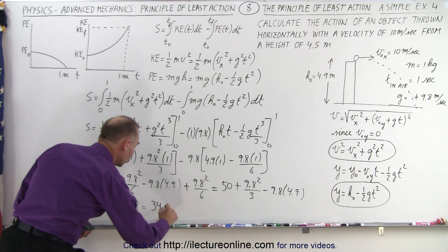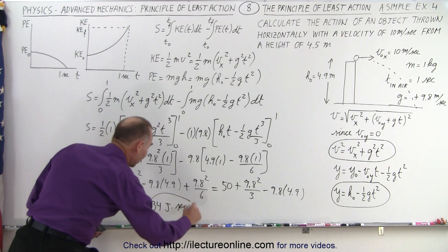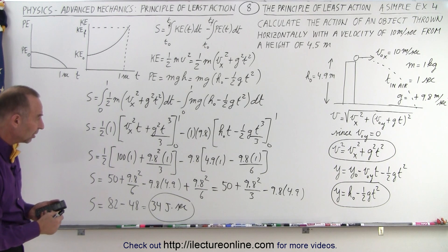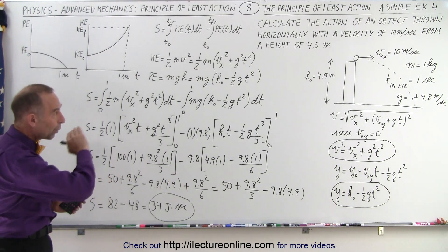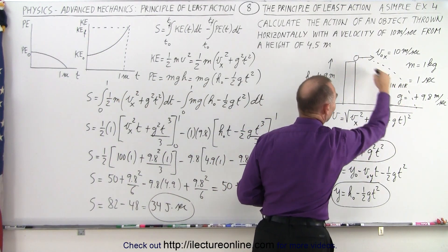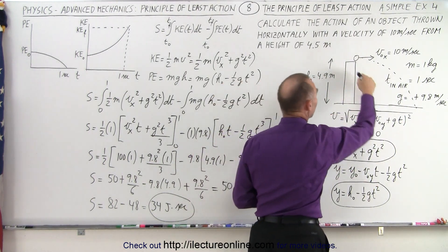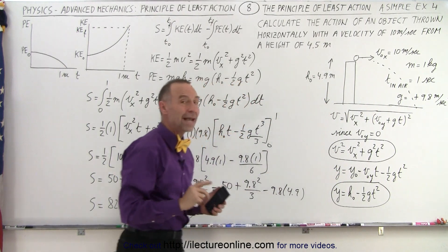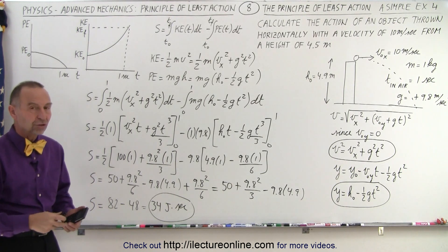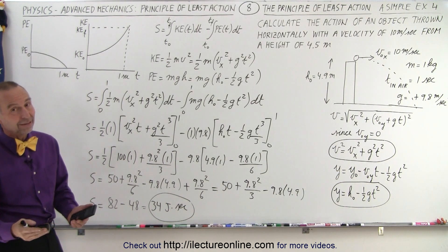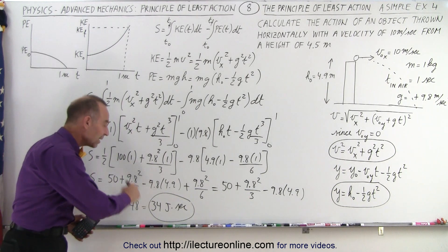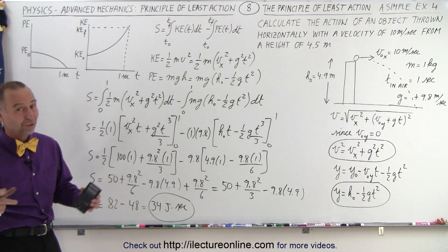So 34, and the units are joules times seconds — it's energy times time. We get a positive value because we start with quite a bit of kinetic energy initially. That should be the lowest number we'll get no matter what path we take. If we start from this location, end up in this location, and take exactly the same amount of time — one second — regardless of what path we take, the calculated action will be bigger. We presume this is the path of least action because that's the path the object actually takes. In the next couple of examples, if we take a different path we should get a result bigger than 34 joules per second. Let's do a couple more examples like that.